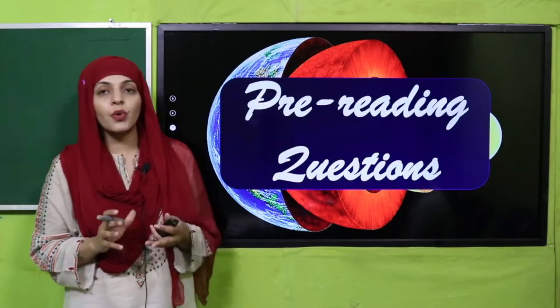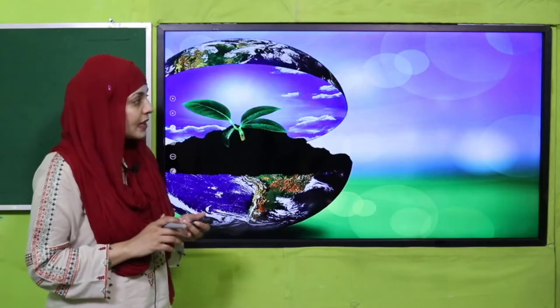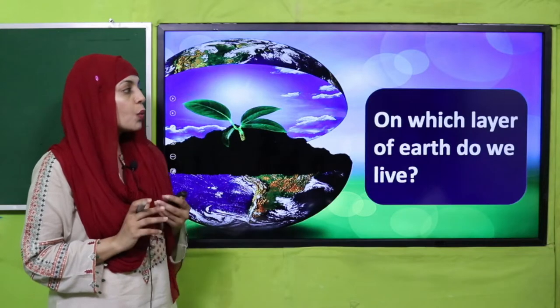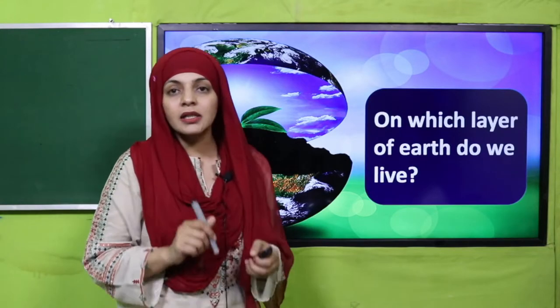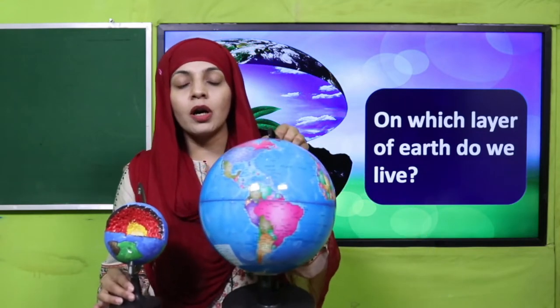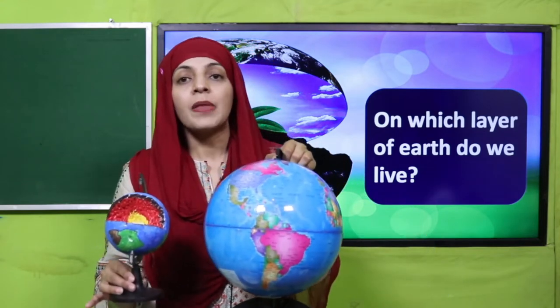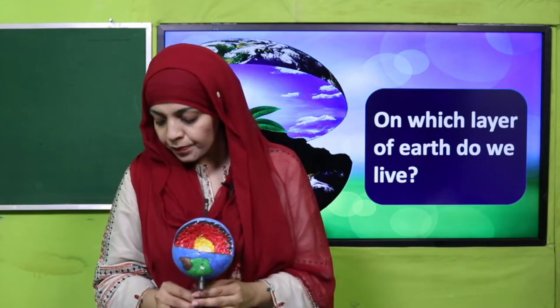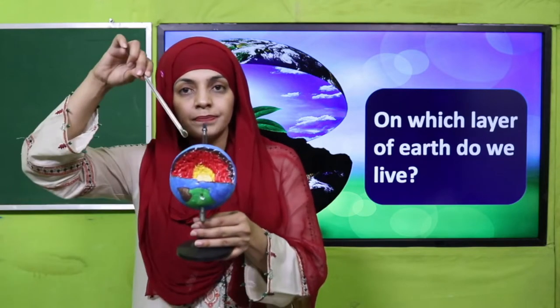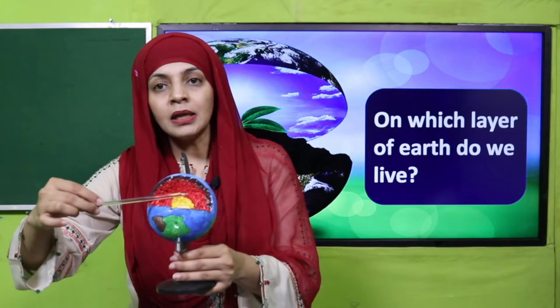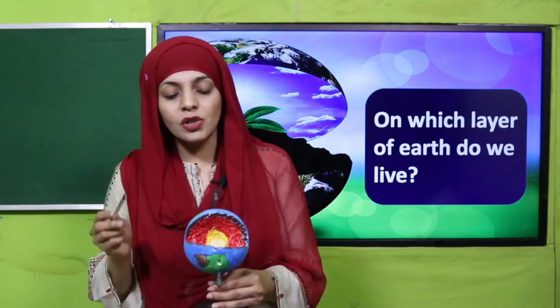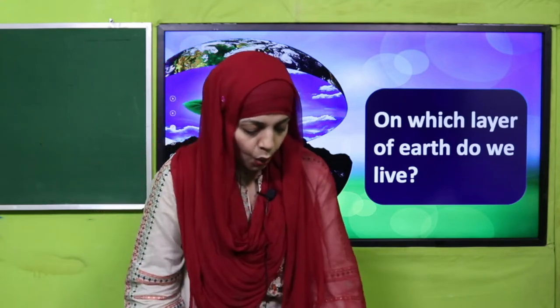Now let's quickly move forward to the student learning outcomes. In today's lecture, students will be able to describe the structure of the earth — that is crust, mantle, and core — and the physical characteristics of these distinct parts. Students will also be able to discuss the internal structure of the earth and how its distinct parts are different from each other. Now, the pre-reading question: on which layer of earth do we live? Hum earth ki kaunsi layer pe rehte hain? Of course, we live on the crust.